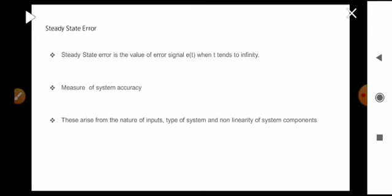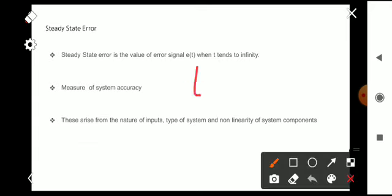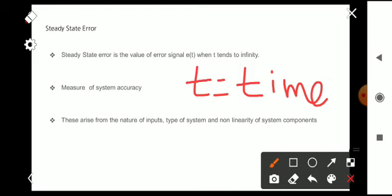What is steady state error? Normally, the steady state error is the value of the error signal e(t) when time t tends to infinity. It is actually the measure of system accuracy.